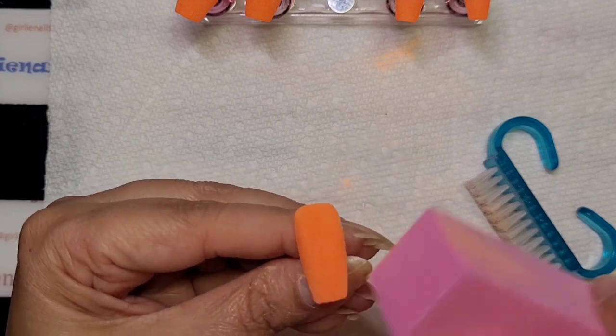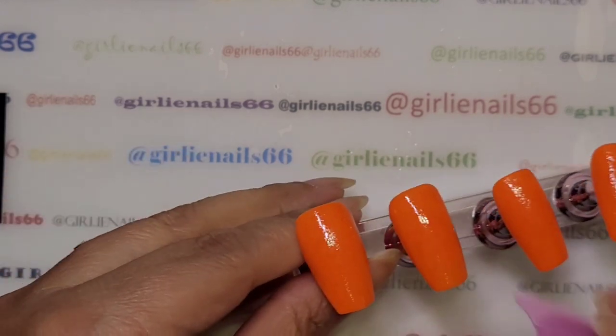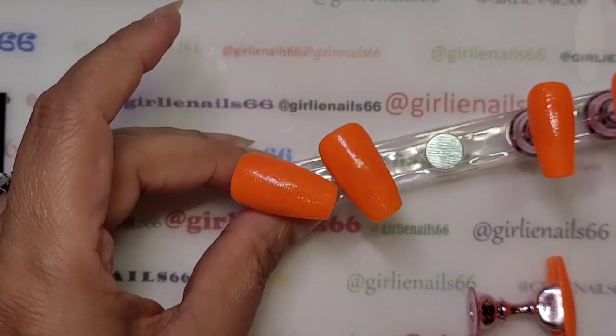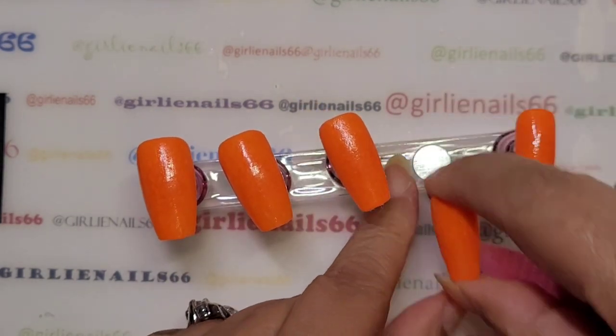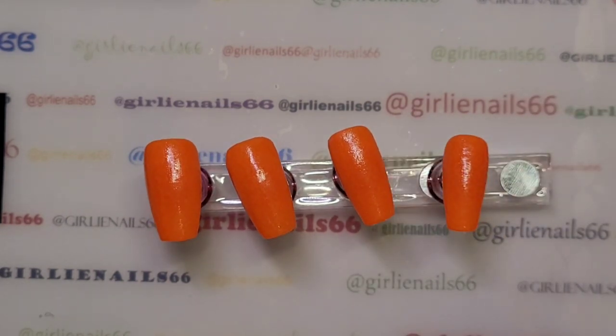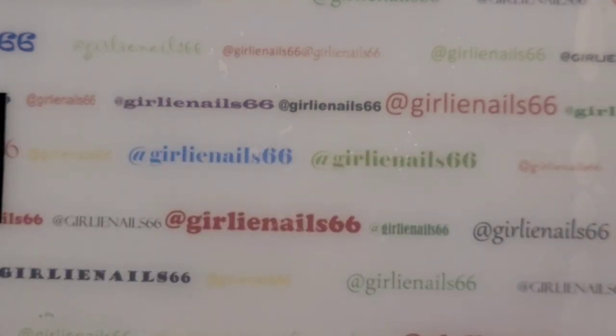I'll clean it off first, and then base coat and cure that. Then we will come back for stamping. Once I've base coated it and cured it, I will take the sticky layer off just because I'm going to stamp. I don't need the sticky layer on there. The reason I base coat is so I can smooth it out a little more so the stamping will stick.